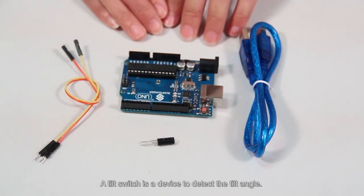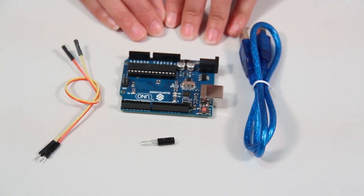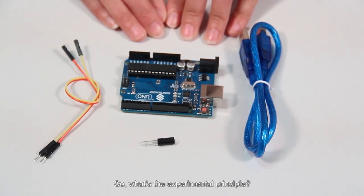A tilt switch is a device to detect the tilt angle. So, what's the experimental principle?